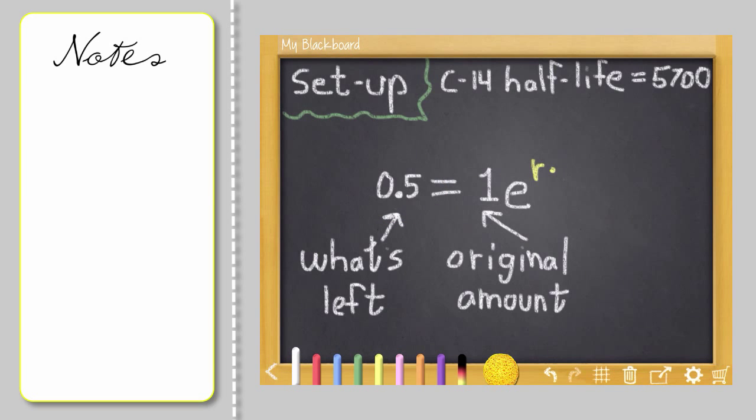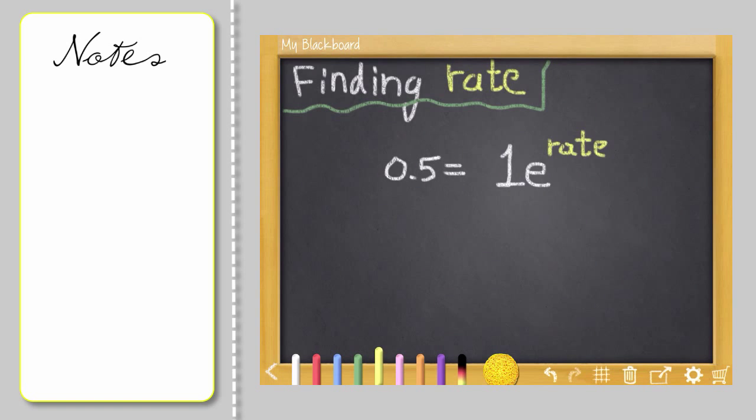Rate is R. That's what we're looking for, and T, the time, will be 5,700 years. I'm going to rewrite this so I have a little bit more room. First things first. 1 multiplied by anything doesn't change it, so we can erase that.